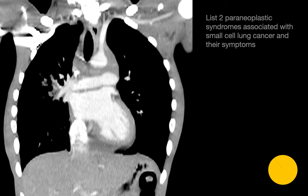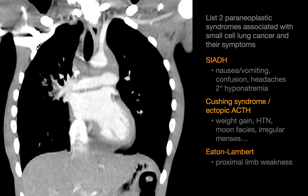Name at least two paraneoplastic syndromes associated with small cell lung cancer and their symptoms. The paraneoplastic syndromes associated with small cell lung cancer include SIADH, or syndrome of inappropriate antidiuretic hormone secretion, which can manifest as headache due to hyponatremia, confusion, nausea, or vomiting.